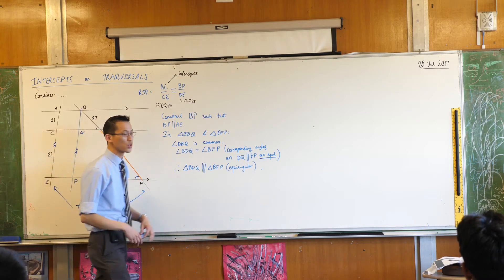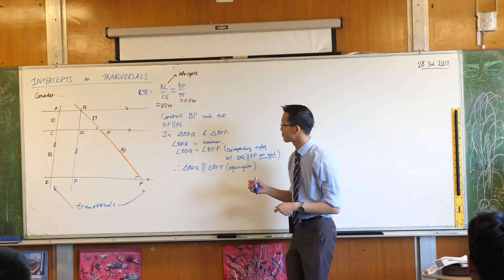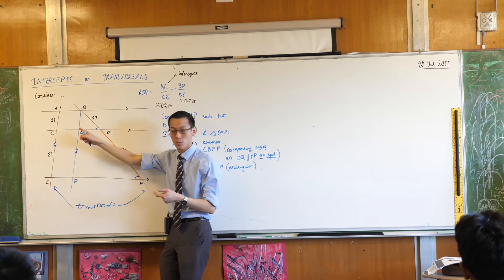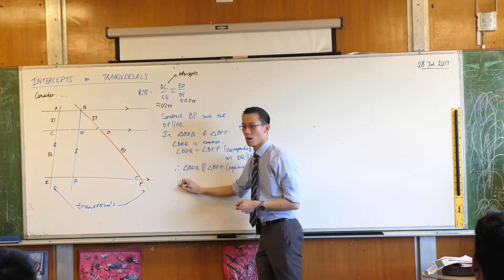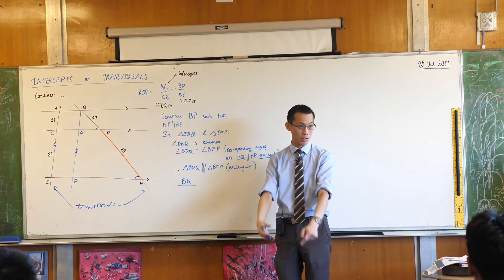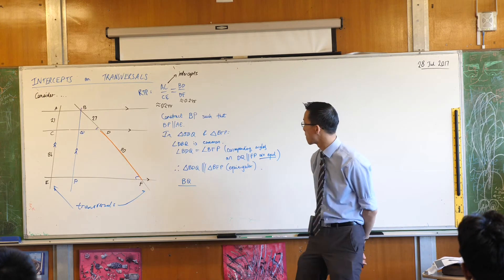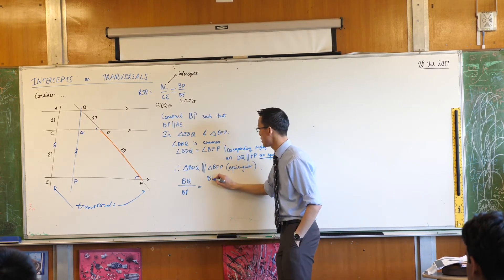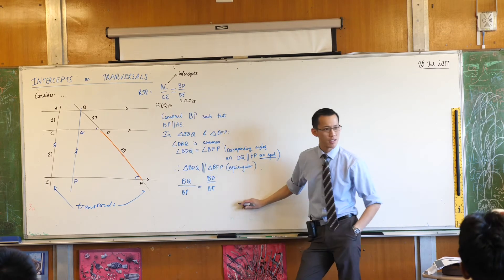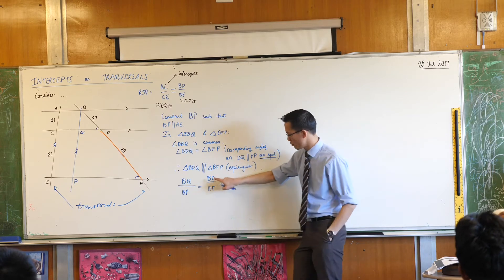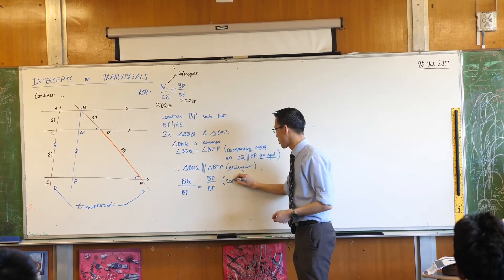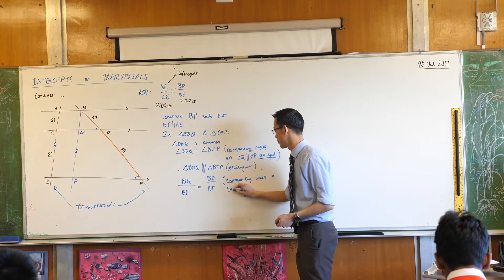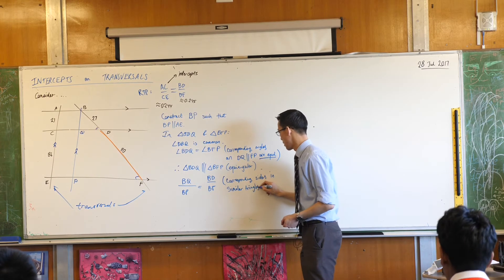Now that I've got my similar triangles, I can now say something about the ratios. So what will I do? AC and BD. Well, I don't have AC here. I do have something that's related to AC though, so that's what I'm going to appeal to. I'm going to say BQ on, now I've got to compare it to the corresponding side in the similar triangle. What is the corresponding side? What corresponds to BQ in the big triangle? It's BP, right? BP equals BD on BF. Make sense? Little triangle, big triangle. Little triangle, big triangle. Reason, and you can't skip this: corresponding sides in similar triangles are in proportion.